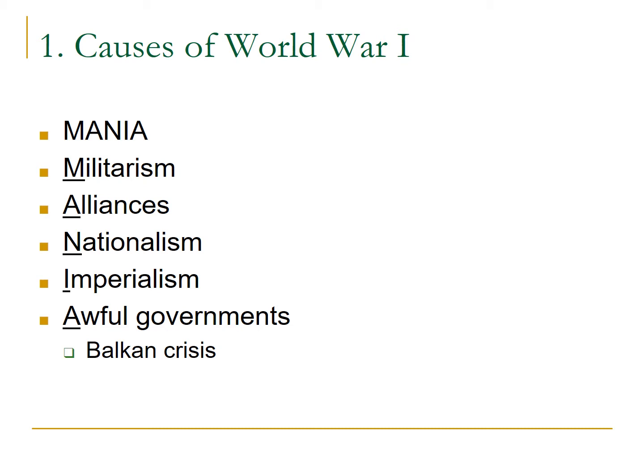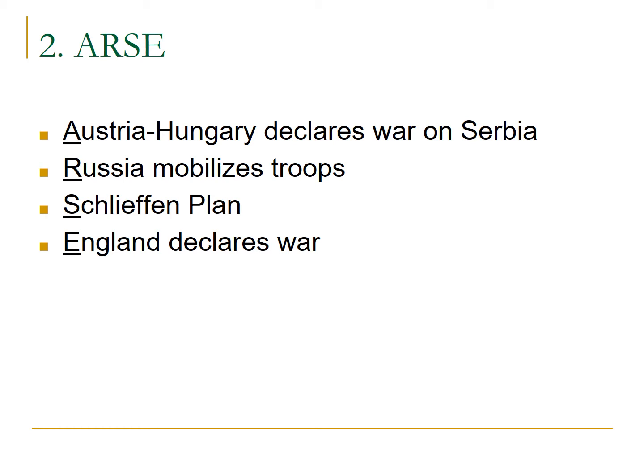The desire for more spheres of influence to gain access to raw materials and new markets leads to increased competition between nations, which leads to more militaristic strikes, which leads to the creation of alliances. They are all interconnected. The assassination of Franz Ferdinand and the Balkan crises were part of it, but also awful governments — many of the governments of these nations continued to up the ante and the rhetoric towards one another.